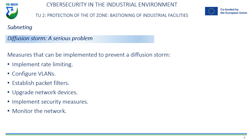Additional prevention measures include: updating network devices and ensuring they are in good health to prevent errors that can cause a broadcast storm; implementing security measures to prevent denial of service (DoS) attacks and other types of attacks that can cause network overload; and monitoring the network for possible traffic anomalies, such as an overload of network packets, so that you can act quickly and prevent a broadcast storm. By implementing these measures, you can significantly reduce the risk of a broadcast storm on a local area network.